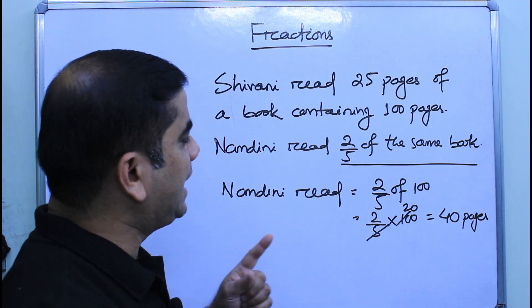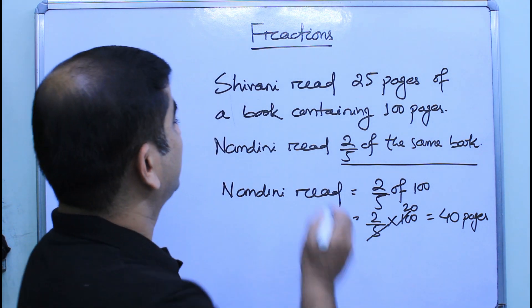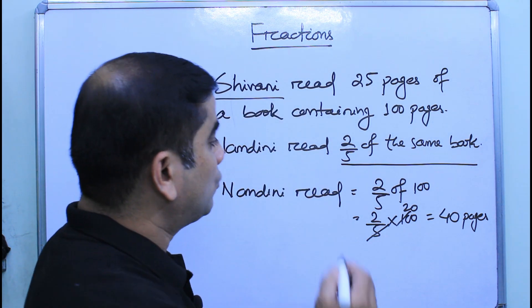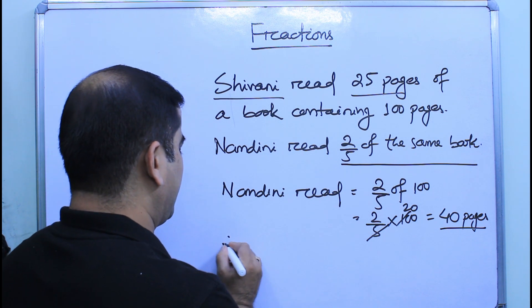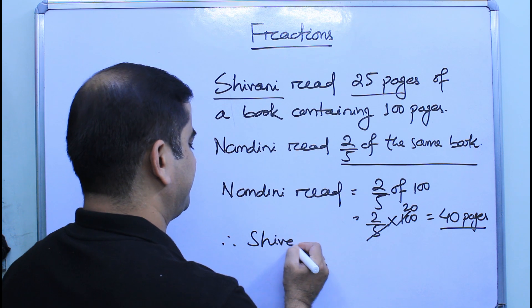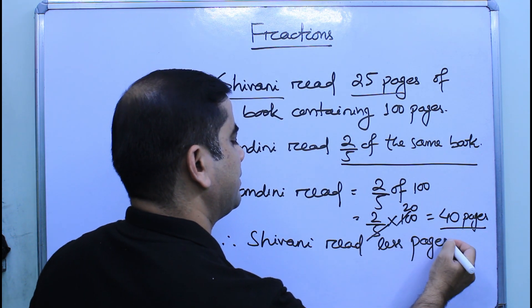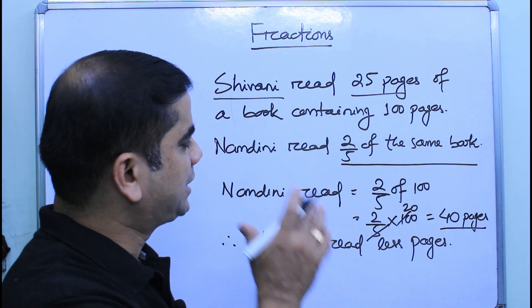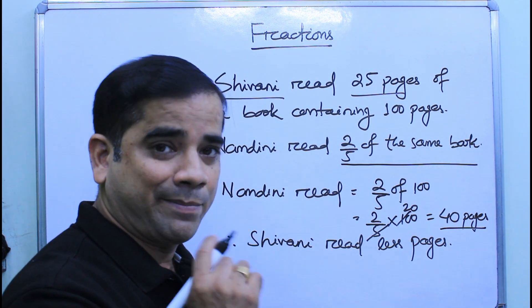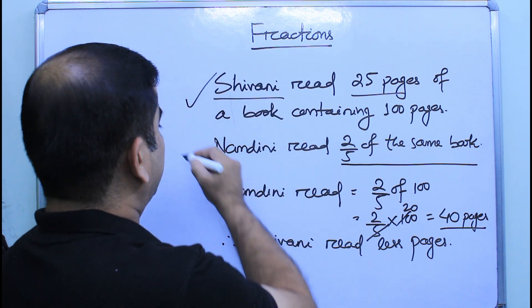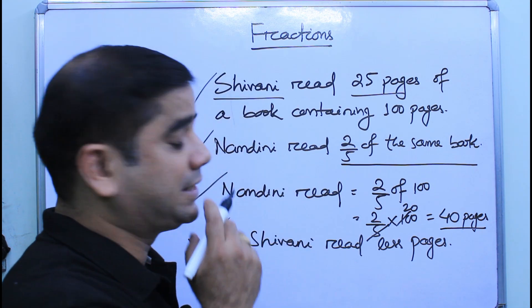Nandini read 40 pages and Shivani read 25 pages, so Shivani read less pages. The final answer is that Shivani read less pages. The solution for a word problem should always have statements — a first statement, a second statement, a statement for the calculation part, and a final statement. You need to follow these steps to get full marks in your examinations.